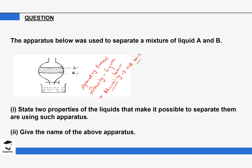The name of the apparatus is a separating funnel, and the two properties are density and miscibility. That brings us to the end of this subtopic. Make sure you are able to use this method — the most appropriate method is the separating funnel — and remember it works because the solutions have different densities and because they are immiscible and do not mix. See you in the next session.